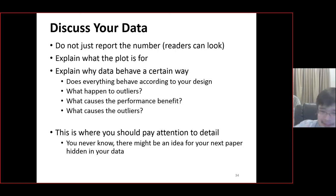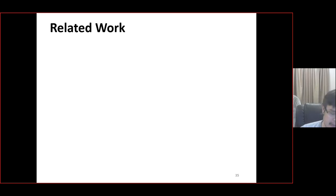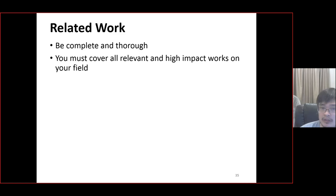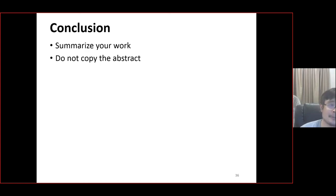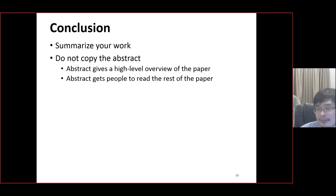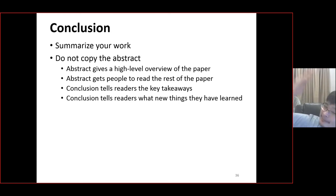Pay attention to detail because sometimes your next paper idea is hidden in your data. For related work: follow directly from your literature survey. Be complete — you must cover all the relevant and high-impact works in your field. Break the discussion down into subtopics — don't list one paper at a time; logically group them so each subtopic relates to certain elements of your problem or design. Then in the conclusion, don't just copy the abstract. The abstract gives a high-level overview to motivate whether you want to read the paper; the conclusion tells the reader the key takeaways now that they've read it. Focus on the problem, how you addressed it, and the key takeaways.